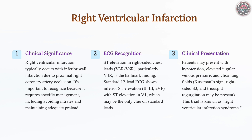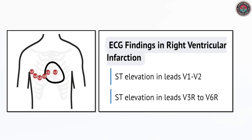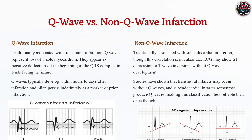Q-wave infarctions were traditionally linked to transmural MI, while non-Q-wave infarctions suggested subendocardial involvement. However, Q-waves can form in both types, making infarct depth assessment unreliable without additional clinical and biomarker evaluation. Modern diagnosis relies on ST-segment changes and troponin levels.